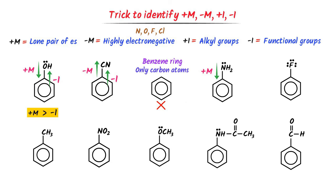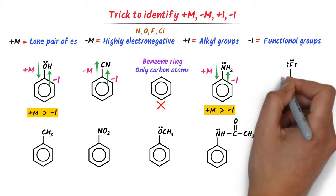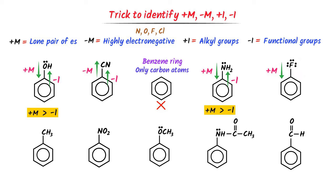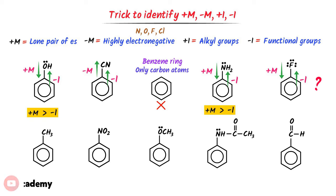In the fourth case, NH2 has a lone pair of electrons, so it shows positive M effect. On the other hand, NH2 is a functional group, so it shows negative I effect. We know that positive M effect is always greater than negative I effect. In the fifth case, fluorine has lone pair of electrons, hence it shows positive M effect. On the other hand, fluorine is a functional group attached to the benzene ring, so it shows negative I effect. In the case of halogens like fluorine and chlorine, negative I effect dominates positive M effect because they are very highly electronegative atoms that strongly attract shared pairs of electrons.